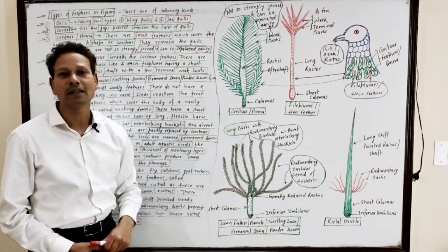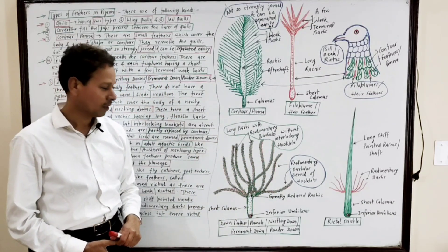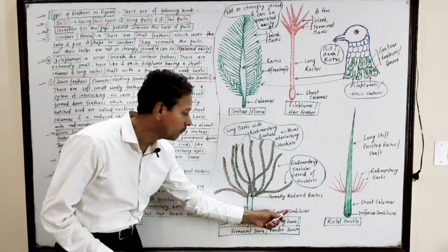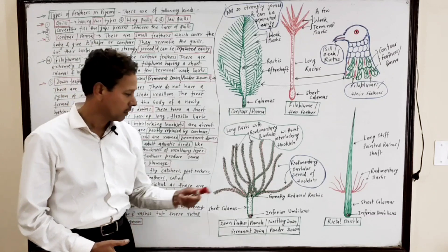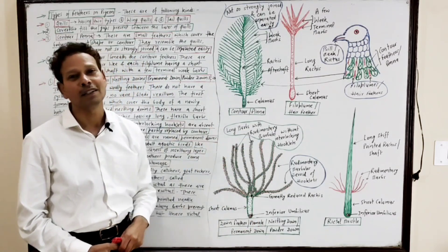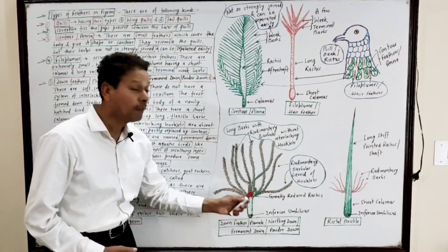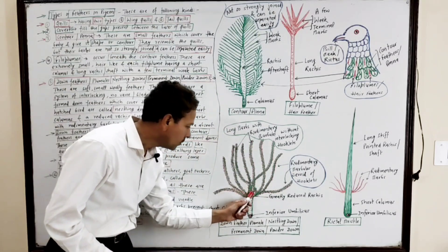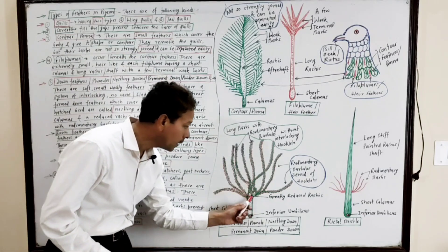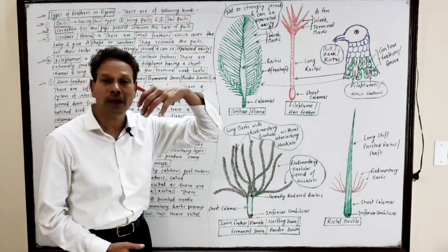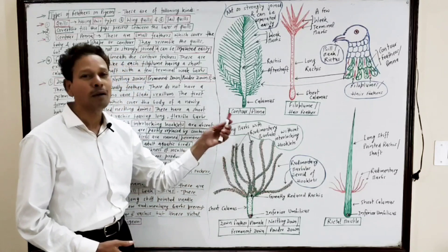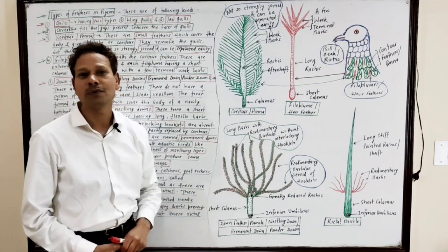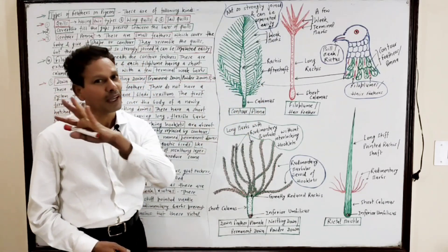This down feather — this plume or nestling feather — consists of a short calamus. At its basal part there is a pore aperture called the inferior umbilicus, through which the feather obtains nourishment. The rachis or aftershaft is greatly reduced. On this greatly reduced rachis there is a group of soft, elongated barbs. In these barbs, the barbules are greatly reduced and without any interlocking hooklets — unlike quills, which have well-developed barbs, barbules, and interlocking hooklets.